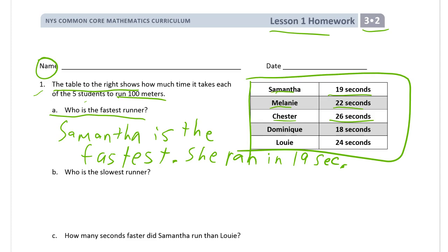Who is the slowest runner? The slowest runner is going to be whoever took the longest to do it. So that's going to be Chester right here. Chester took 26 seconds. He is slowest.